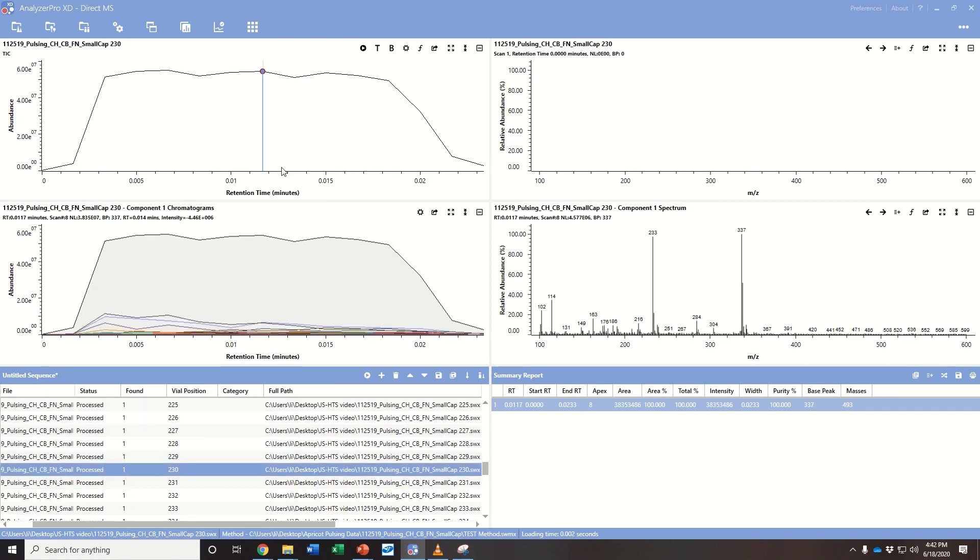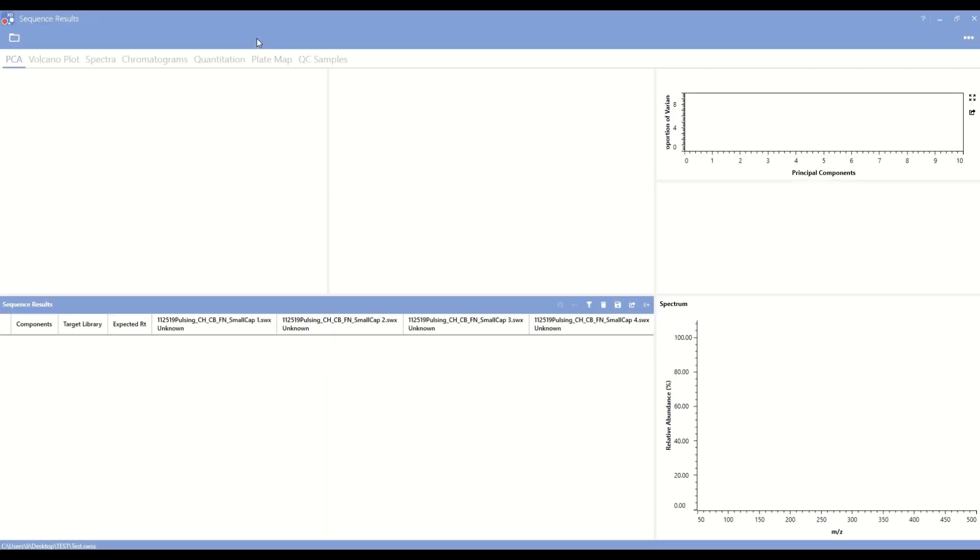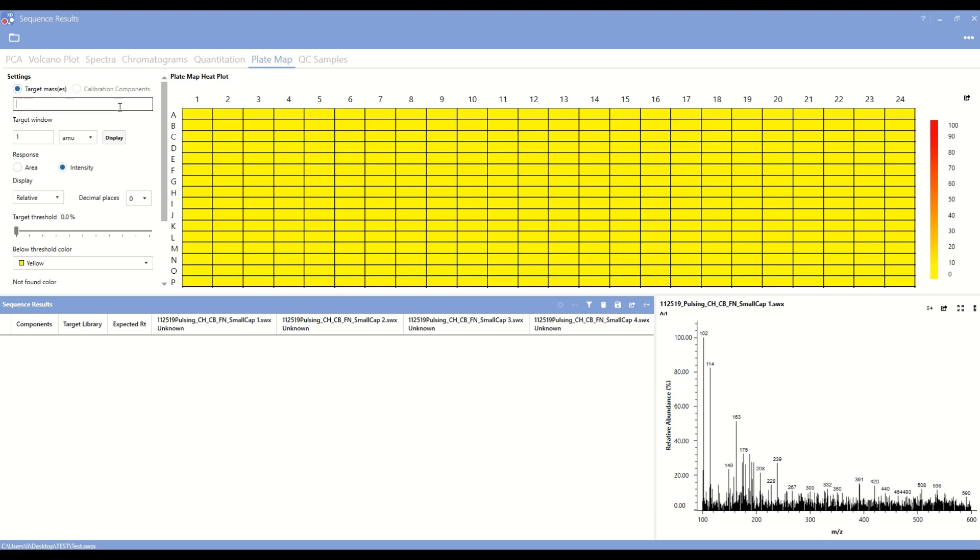You can screen for specific analytes of interest searching by target mass and displaying the results in a well plate heat map format. Wells which show higher abundances of the target of interest can immediately be identified.